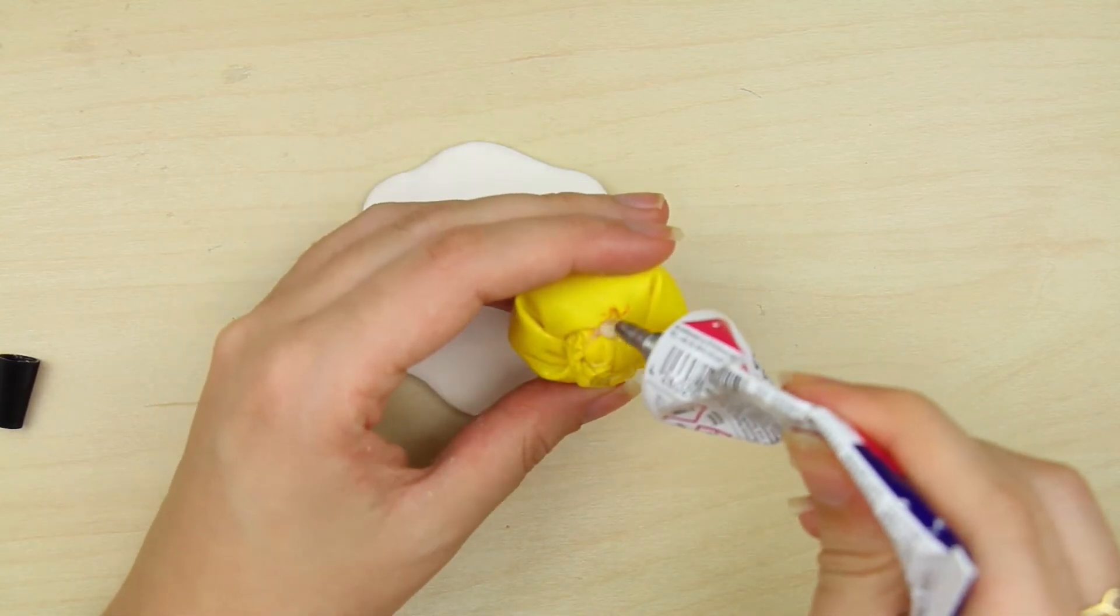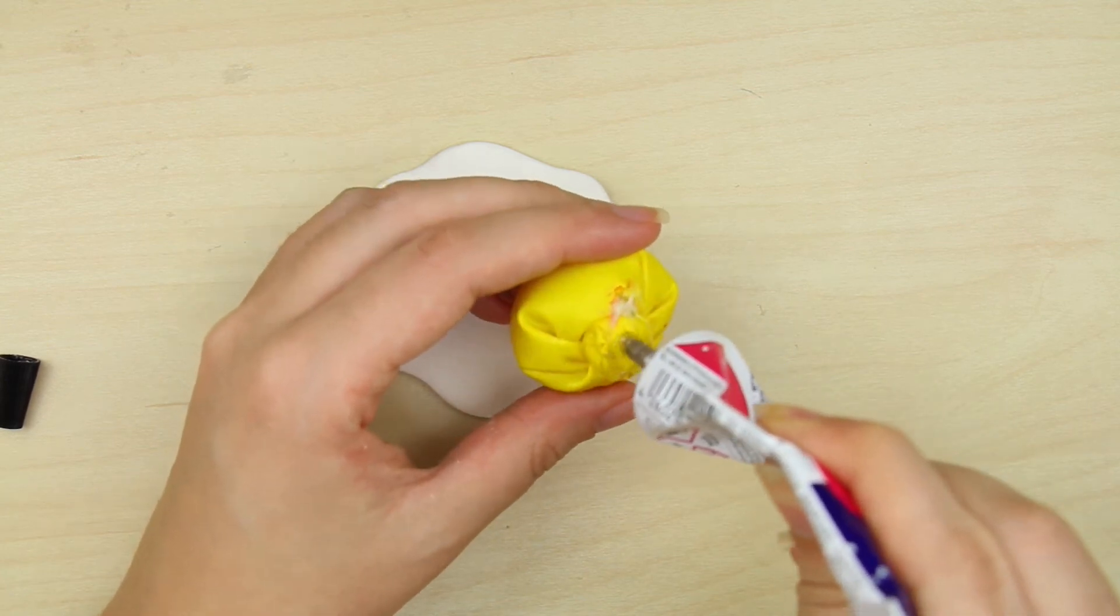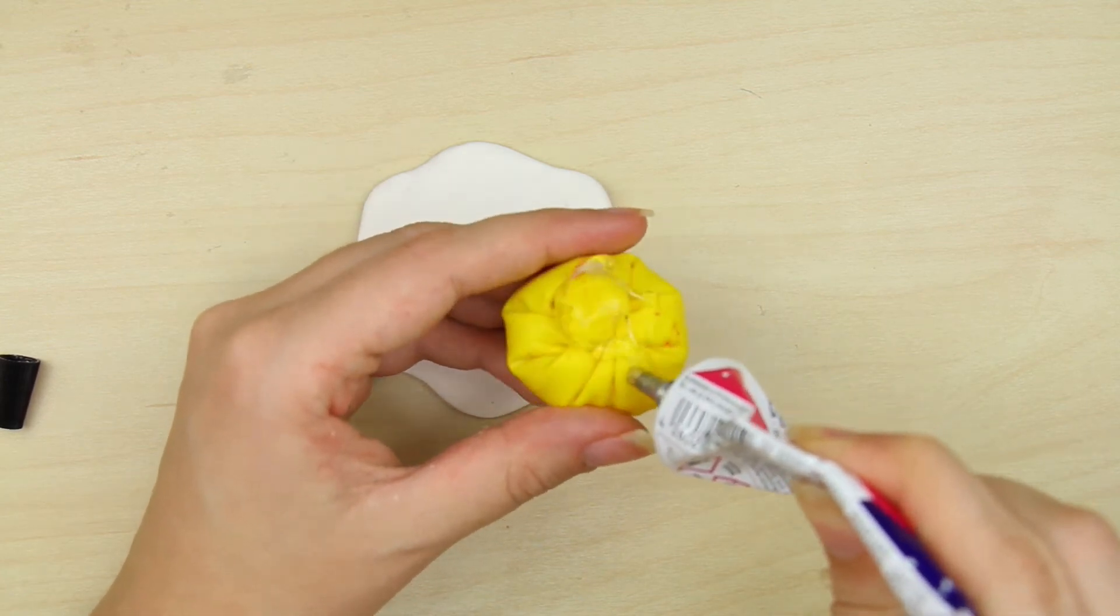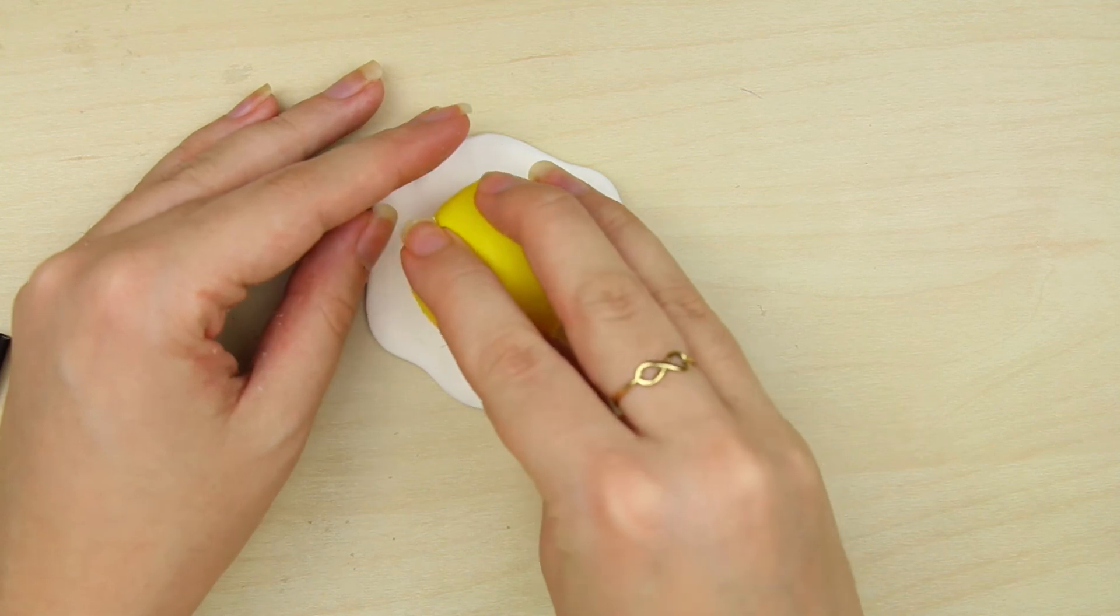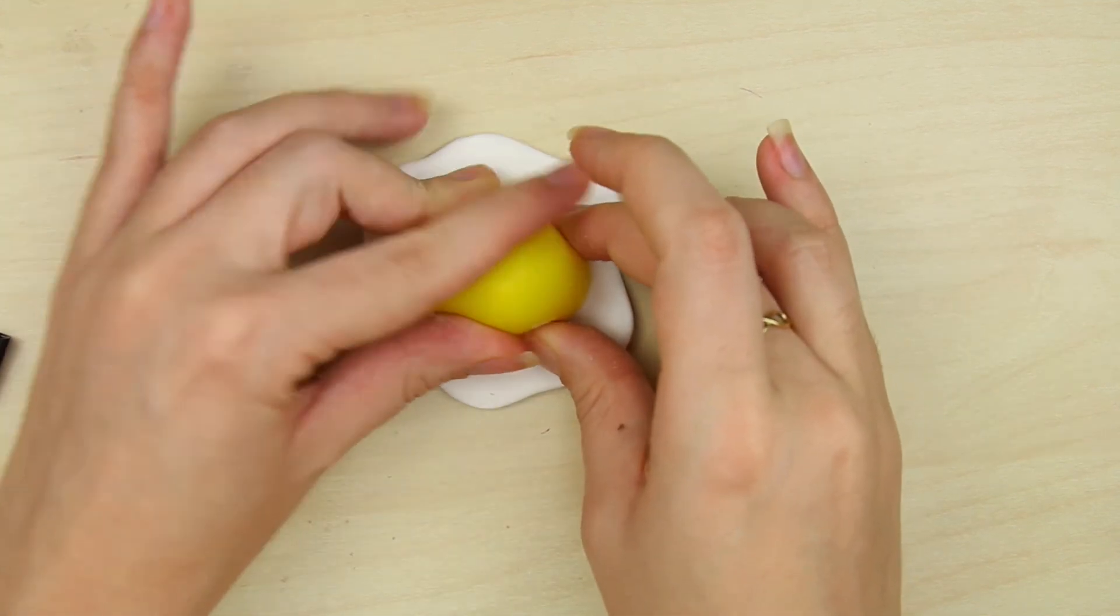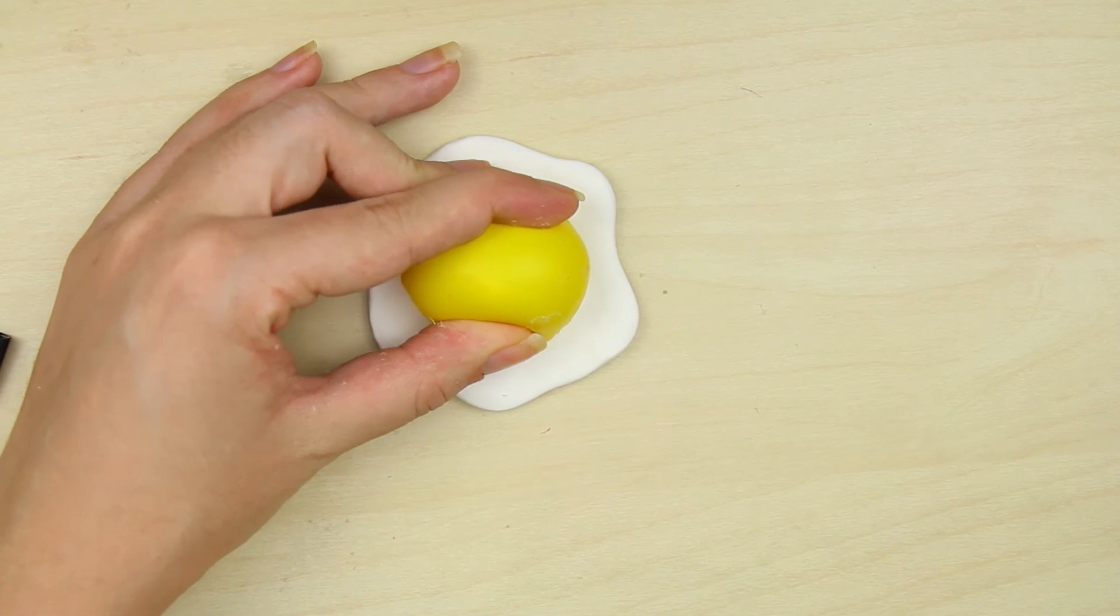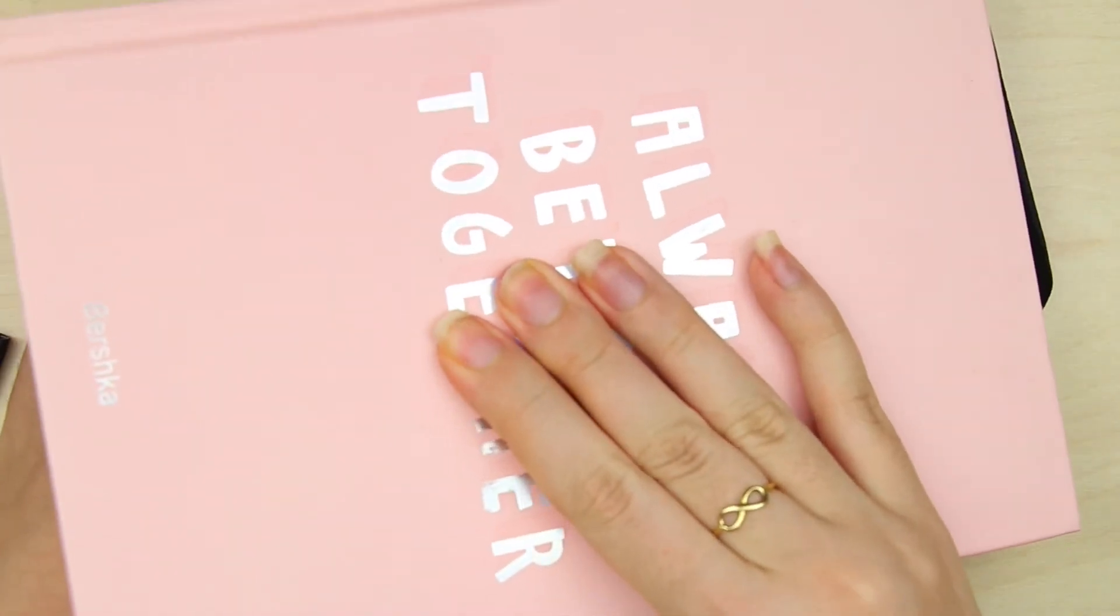Now get some really, really, really strong glue. Put some glue on the bottom side of the egg yolk and glue it to the egg white. Get something heavy to put on top of it so the egg yolk dries flat and creates a typical fried egg shape.